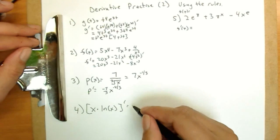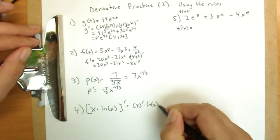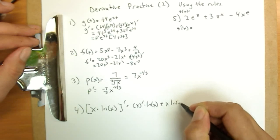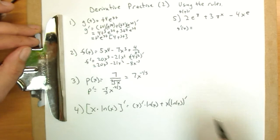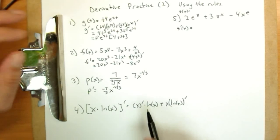Derivative of x times natural log of x. Derivative of x times natural log of x plus x times natural log of x's derivative. So product rule again, they're multiplied, so I do derivative of one times the other plus the opposite combination.